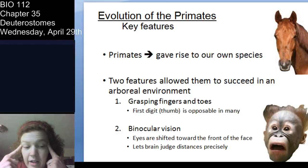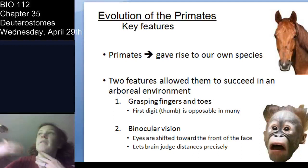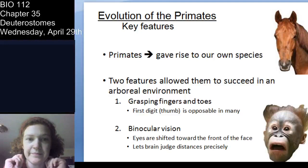The second key feature is binocular vision. Rather than having eyes on the sides of the head, we have eyes facing forward. That makes your visual acuity higher and helps your brain with depth perception — distances are judged much more accurately with binocular vision.